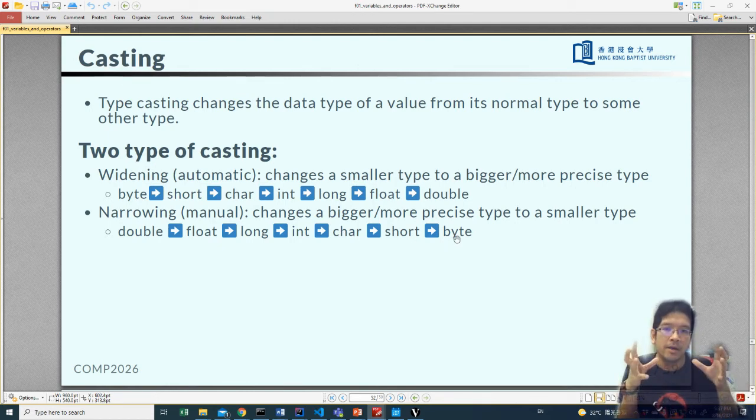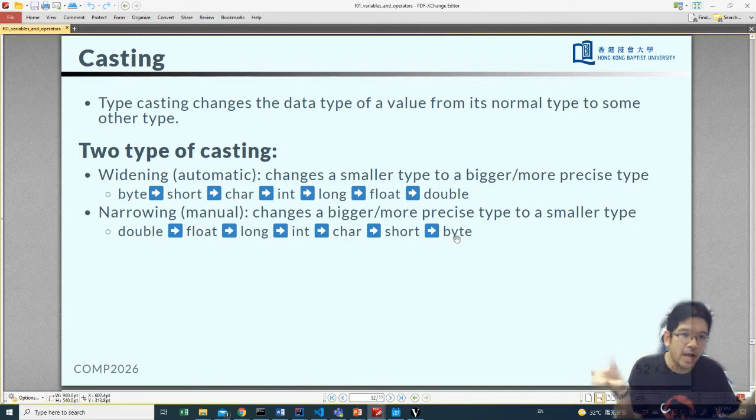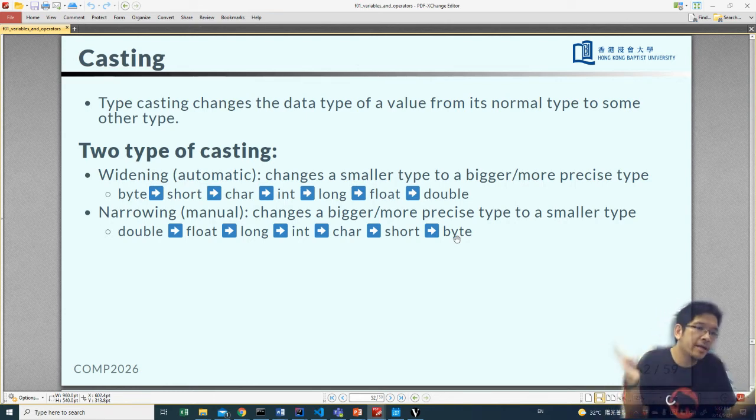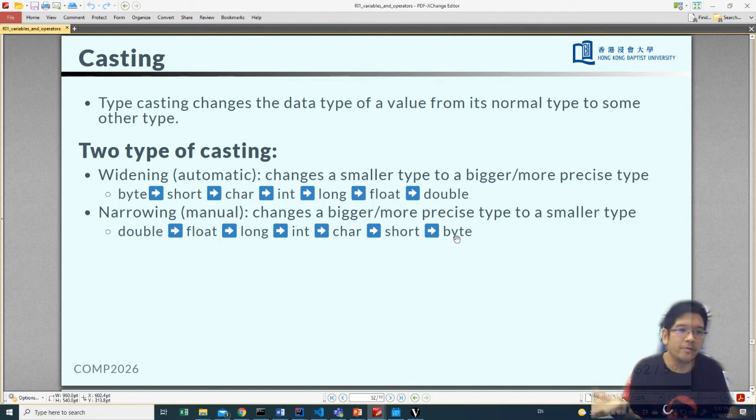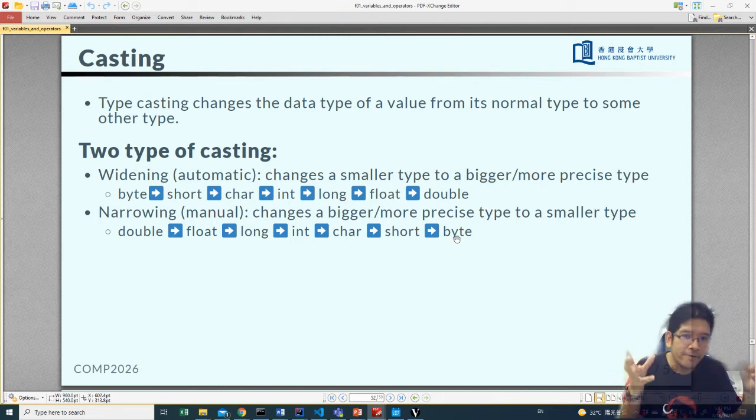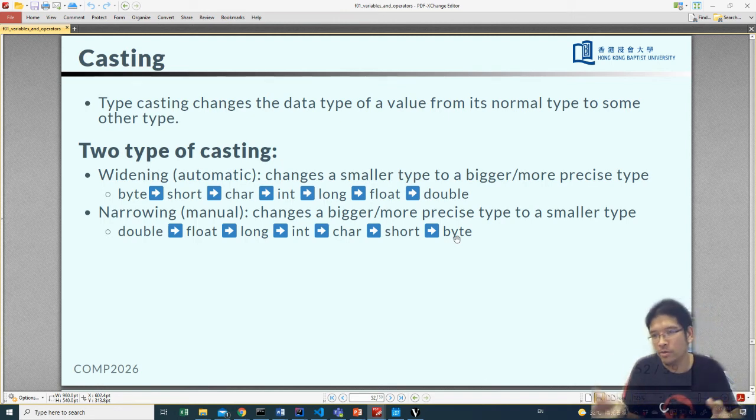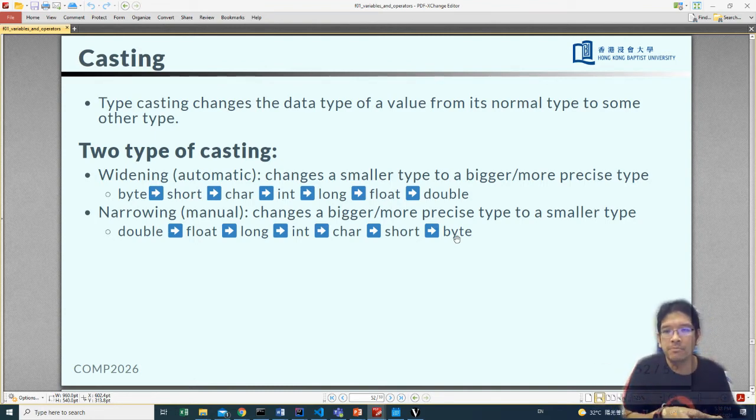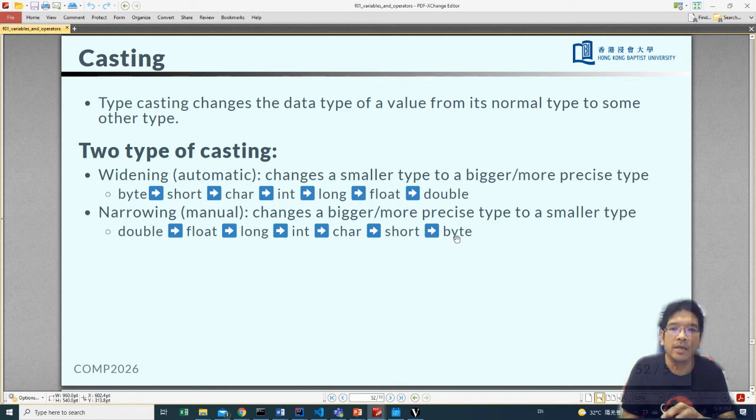Widening: if you use more space to store a bigger type to host a smaller type, there will be no problem. Just like if you're moving from a small apartment to a big house, you won't need to worry about you can't hold or you need to throw away something. Everything you put in there will have enough room to host your original apartment. But for narrowing, if you're changing from a bigger type to a smaller type, it is possible that there's not enough room to host your content, and that could have some problem. So we need to do it in another way.